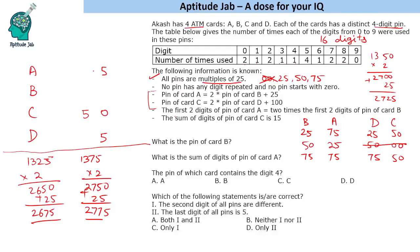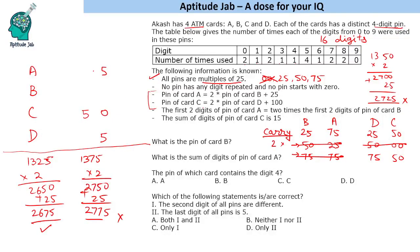This happens because if the last two digits of B are 50 or 75, multiplying by 2 generates a carry of 100 or 150, which increases the first two digits by 1, so the doubling relationship no longer holds. Therefore we can eliminate those two possibilities. We are left with only one possibility: the last two digits of B are 25, and the last two digits of A are 75.